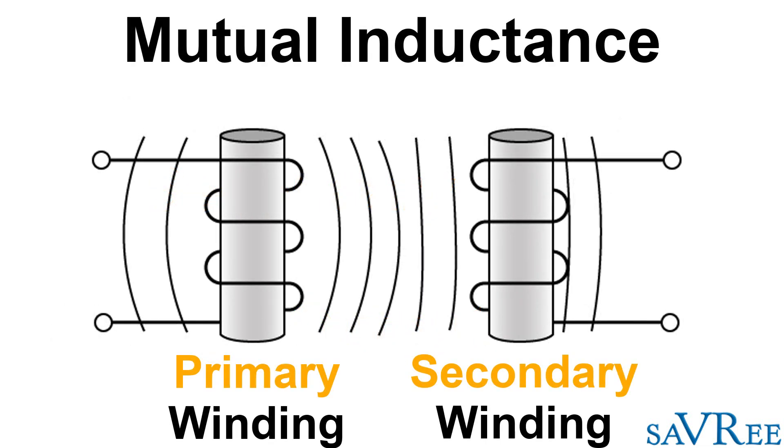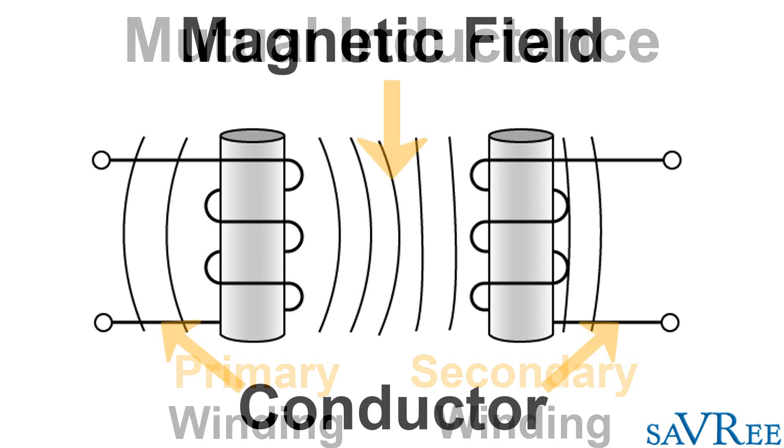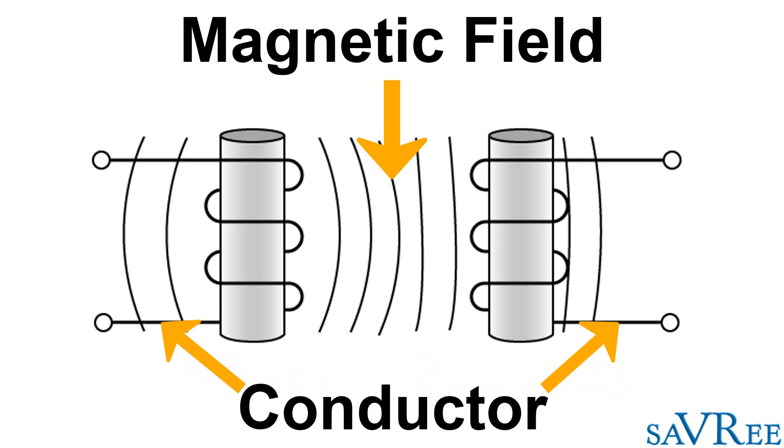Now if you know anything about mutual inductance, you'll actually know that if a conductor is placed within a magnetic field or a changing magnetic field, we will induce a voltage in that conductor. And that's essentially what we're doing—we're changing the amount or the length of conductor within the magnetic field.